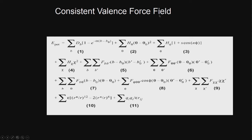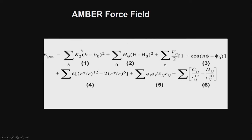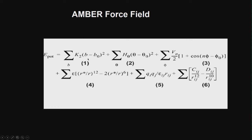CVFF — the consistent valence force field — uses a different functional form for bond stretching: the Morse term instead of the harmonic term. It uses the same equation for angle bending and torsion, but there are many cross terms such as stretch-angle, angle-angle, angle-stretch, and so on. These cross terms require extra parameters. This is called the CVFF force field.